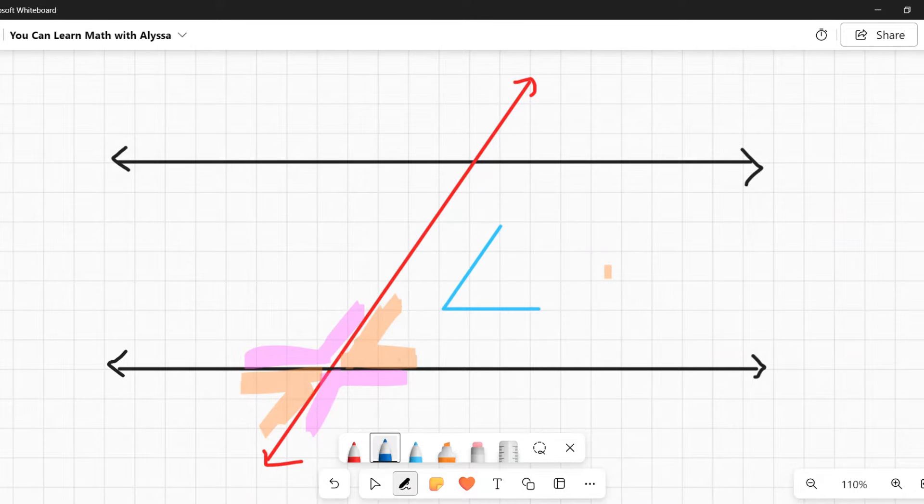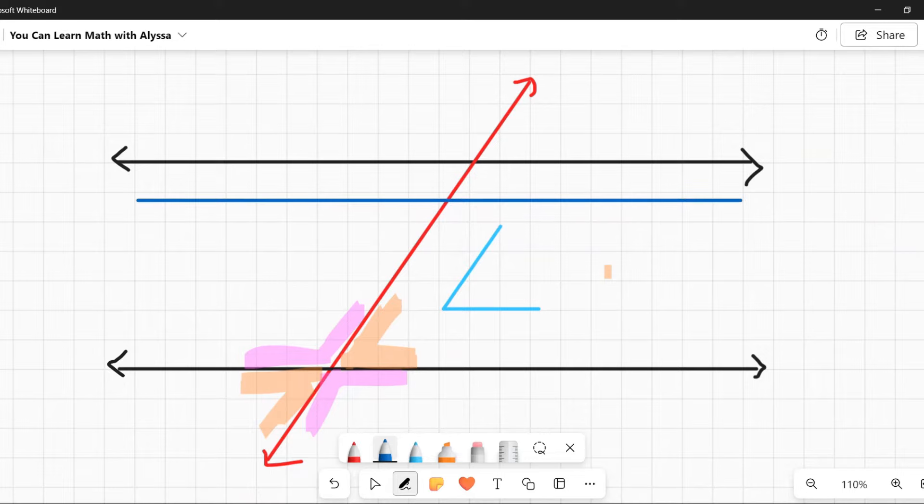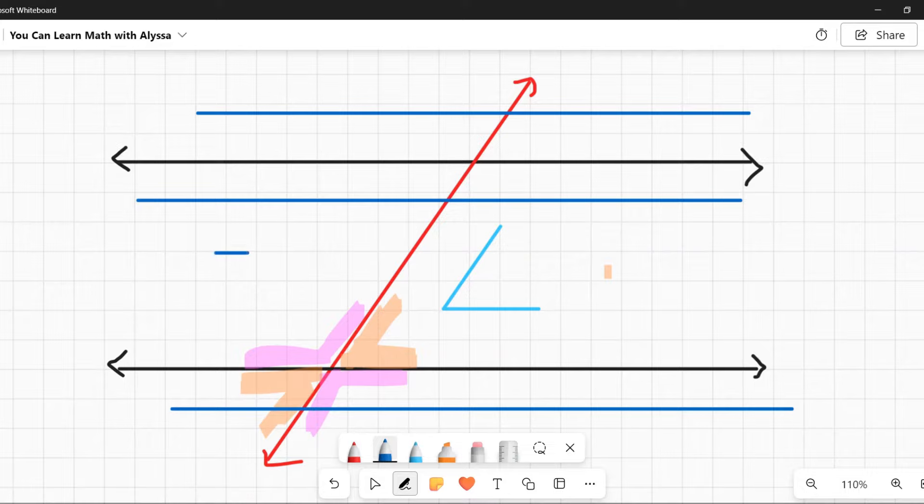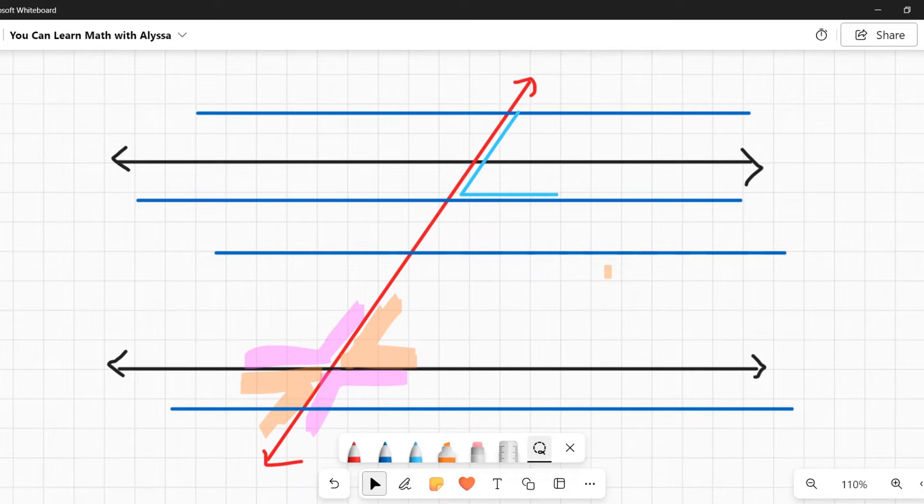So no matter where another parallel line crossed this transversal, it would make this same angle. See how it's making that? There you go. Same angle, same angle. Any parallel line that I were to draw, if I just kept drawing parallel lines, it didn't matter where they were, wherever they are, these parallel lines, this little angle here, it's going to be the same. See, it's fitting in there for every single one of these. It's going to be the same. And that's always true.